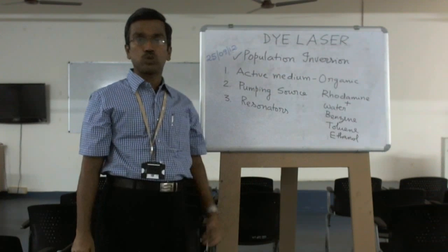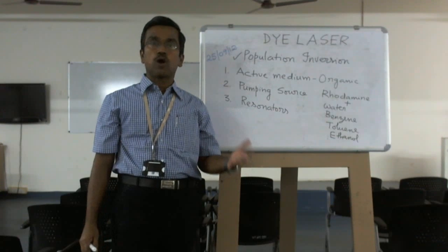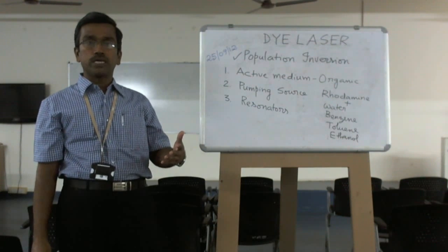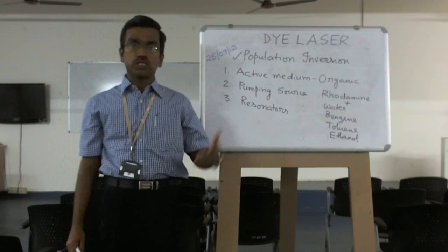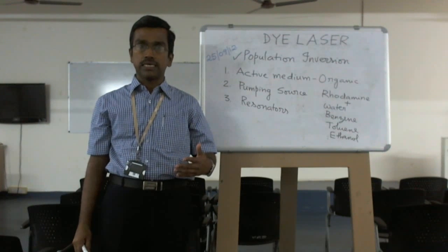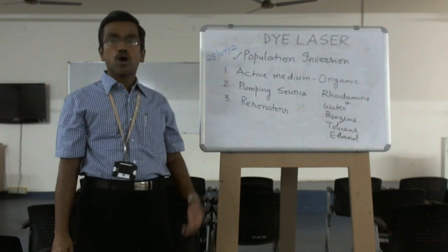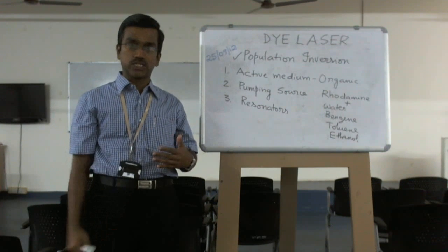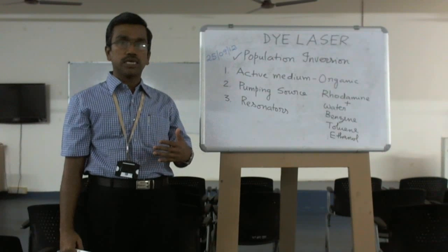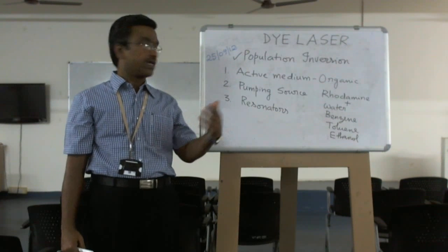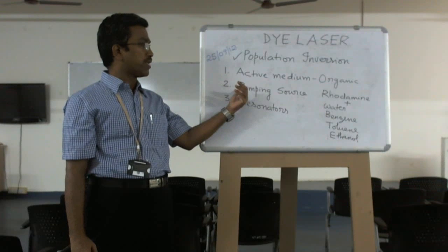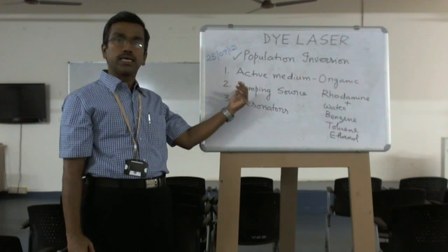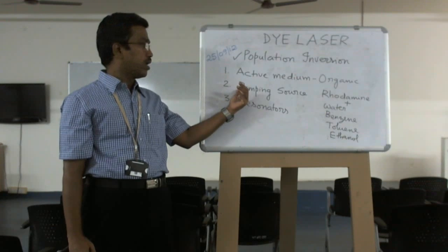The second one is the pumping source. You know many types of pumping source: optical pumping, electrical discharge pumping, inelastic atomic collision, chemical reactions. Here we are going to use optical pumping. Optical pumping means photon excitation. We have to use monochromatic source. Here we can use one type or another type of laser. Excimer laser can be used as a pumping source.